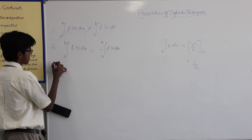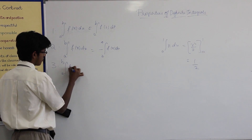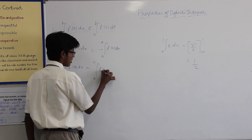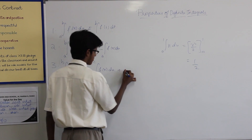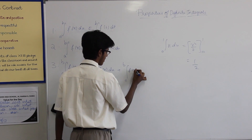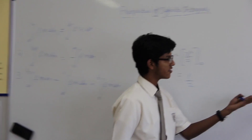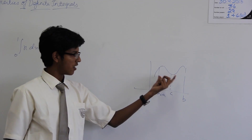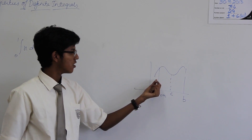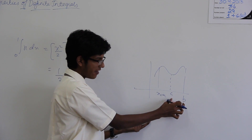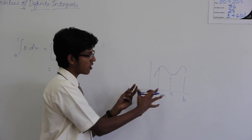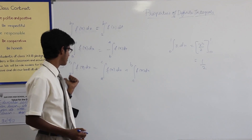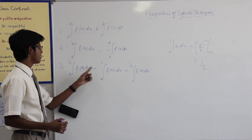The third property is: the integral of f of x dx from a to b can be written as the integral from a to c of f of x dx plus the integral from c to b of f of x dx. So in this graph, if we have another constant c, to find the area under this graph, we can integrate from a to c and add the portion from c to b to get the total final answer. So a to c plus c to b gives us the same result.